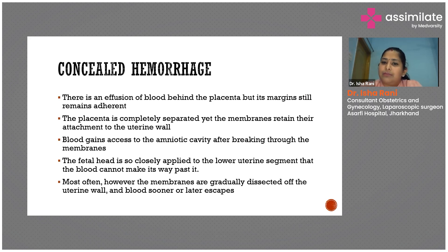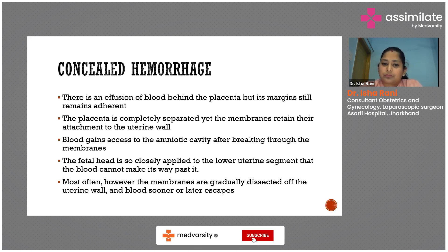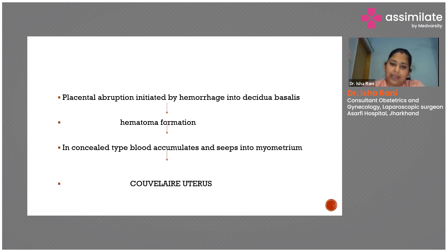In concealed hemorrhage, there is effusion of blood behind the placenta but its margins remain underneath. The placenta is completely separated but the membranes are still attached to the uterine wall. After breaking through the membranes, blood accesses the amniotic cavity. The fetal head is closely applied to the lower uterine segment and blood cannot make its way past it. Sooner or later the membranes gradually get dissected off the uterine wall and blood escapes.